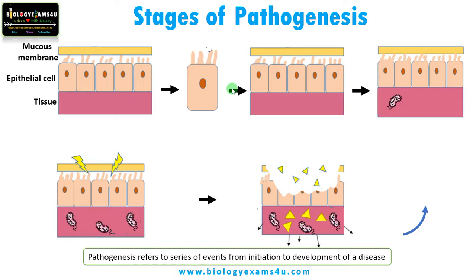Now let us understand the stages of pathogenesis. Suppose this is a mucous membrane, this is the epithelial cell, and this is the underlying tissue.